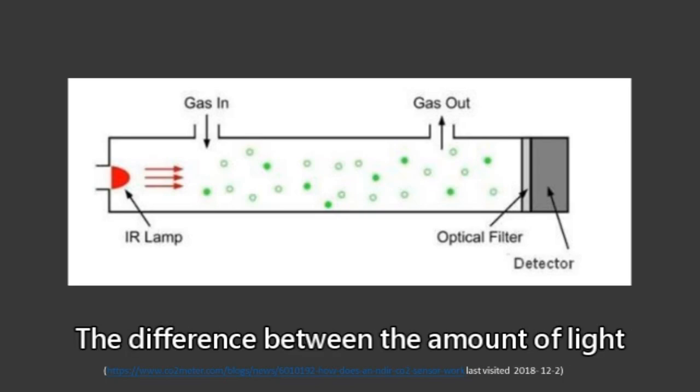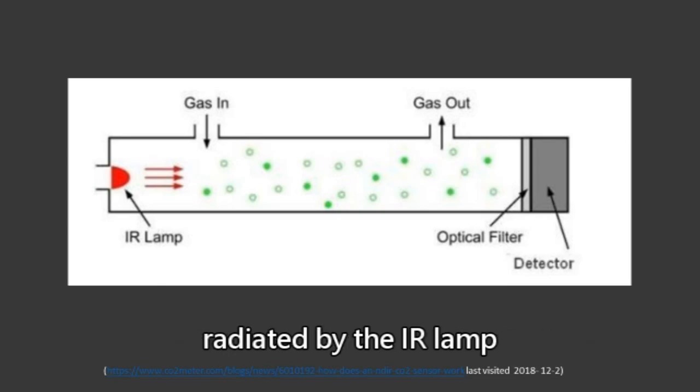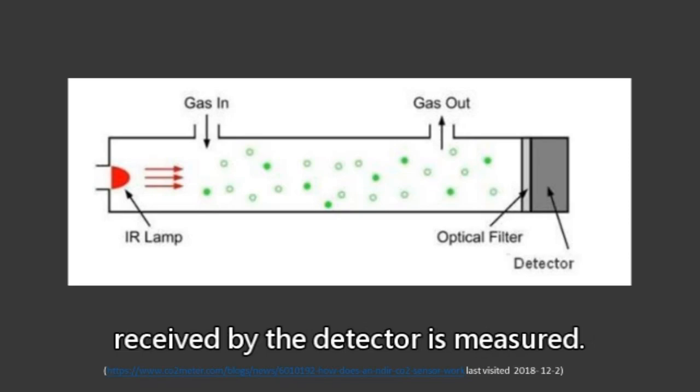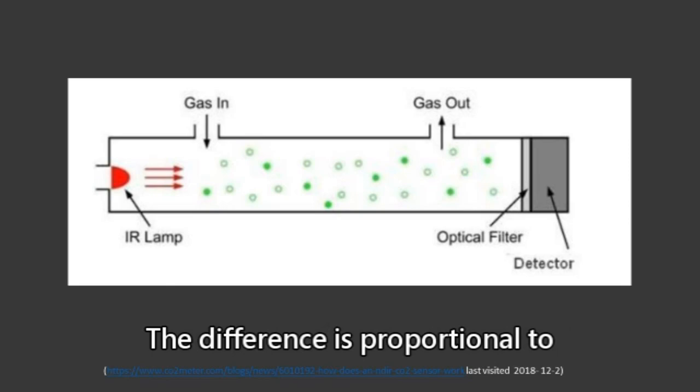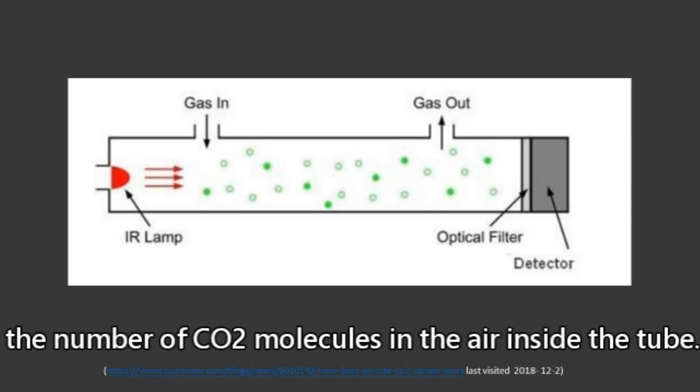The difference between the amount of light radiated by the IR lamp and the amount of IR light received by the detector is measured. The difference is proportional to the number of CO2 molecules in the air inside the tube.